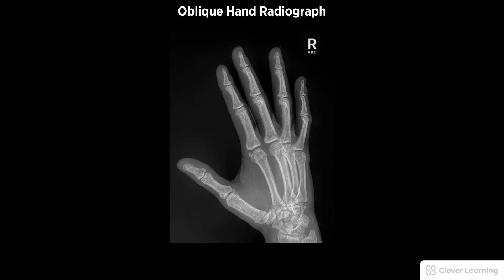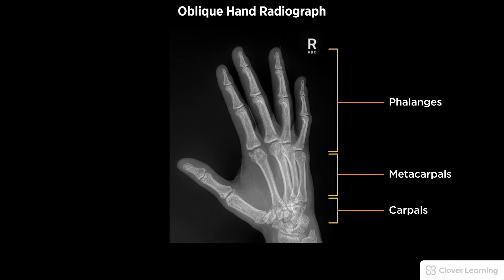A diagnostic oblique hand radiograph must be free of motion with 45 degree rotation and open interphalangeal and metacarpal phalangeal joints. Demonstrated anatomy to include the phalanges, metacarpals, carpals, and distal radius and ulna with proper visualization of soft tissue and bony detail.